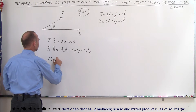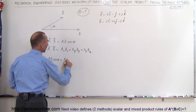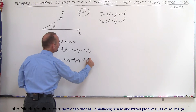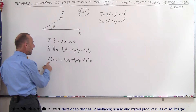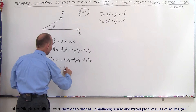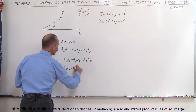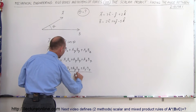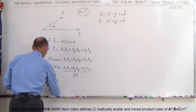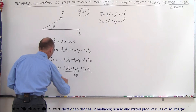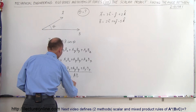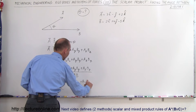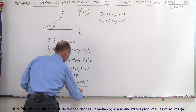Which means we can write: A times B times the cosine of the angle between them equals AX·BX plus AY·BY plus AZ·BZ. Dividing both sides by the magnitudes of A and B, we get cosine of theta equals (AX·BX + AY·BY + AZ·BZ) divided by the product of the magnitudes of A and B.